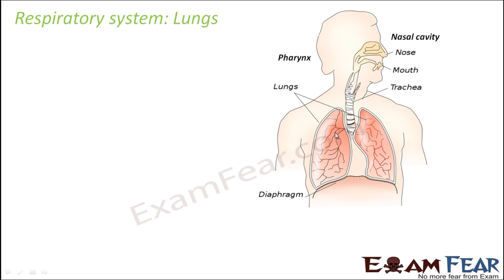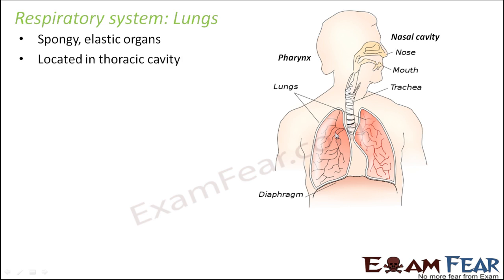The next important part is the lungs — the most important or key organ of the respiratory system. They are spongy elastic organs. They are elastic in nature because they need to expand and contract. When we breathe in, there is some extra volume of air to be accommodated, so the lungs should possess elasticity. Similarly, when breathing out, extra air is removed from the lungs. The lungs are also located in the thoracic cavity — these are the two lungs, the right and the left lung.